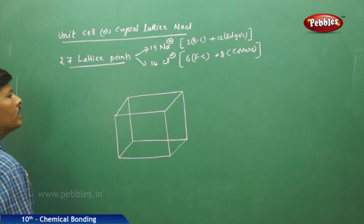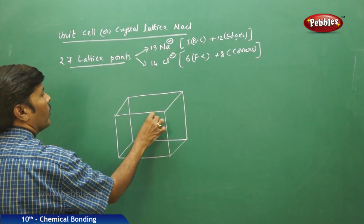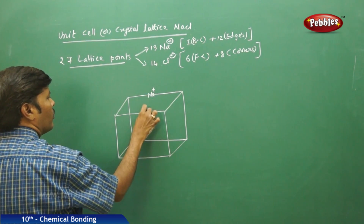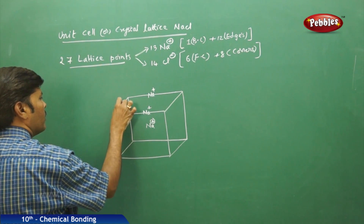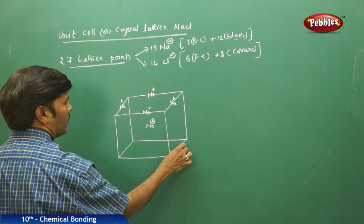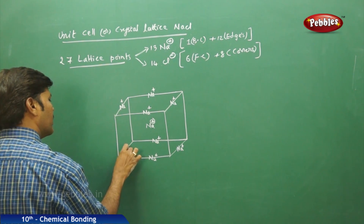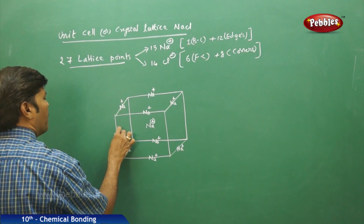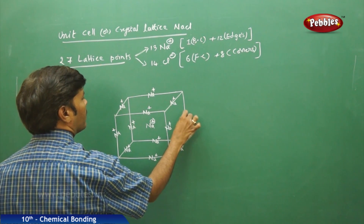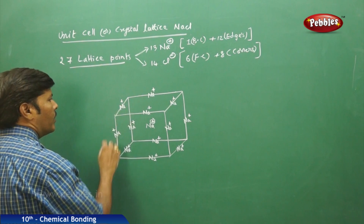I am going to take 1 Na+ ion in the body center, and then 1 Na+ on each of the 12 edges. So in total we have 14 Na+ ions.